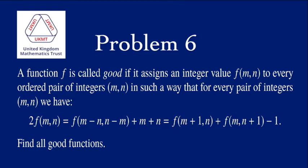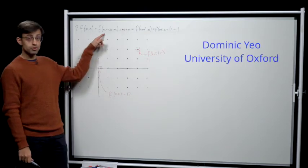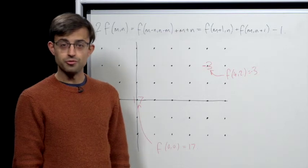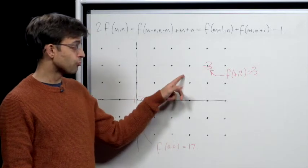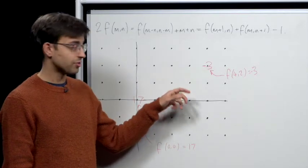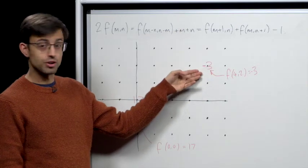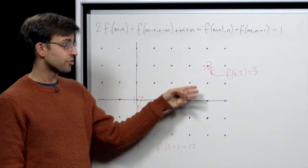Find all good functions. The question gives us a triple equality about this function f, which is a function of 2 variables. One way we can visualize this is by drawing the integer lattice and then marking on each point of the integer lattice, for example here in red, the value that the function takes at that point.